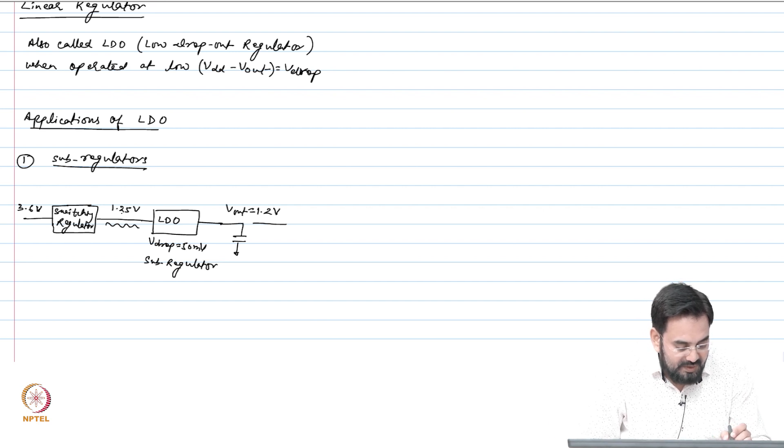If you want 1.2 volt, you design the LDO for dropout voltage of 50 millivolt and your switching regulator, instead of directly regulating to 1.2 volt, will regulate to 1.25 volt, 50 millivolt extra which is the overhead or dropout voltage in your LDO. The output you get is 1.2 volt regulated.